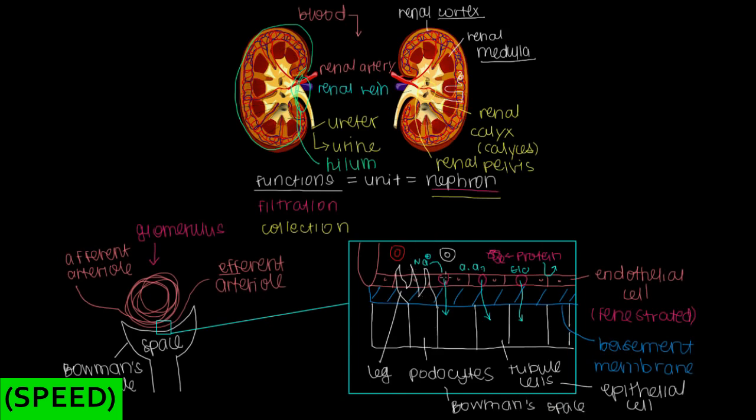We have these podocytes that hug the arterioles by holding on to the endothelial cells. We also have this basement membrane that prevents giant proteins and our red and white blood cells from leaking through. And we have these tubule cells that help line the other side, and they're epithelial cells.